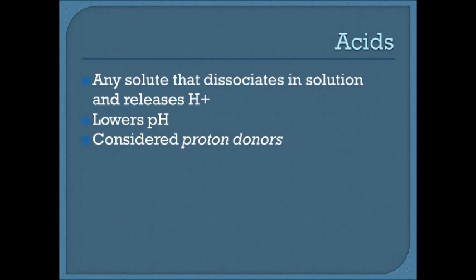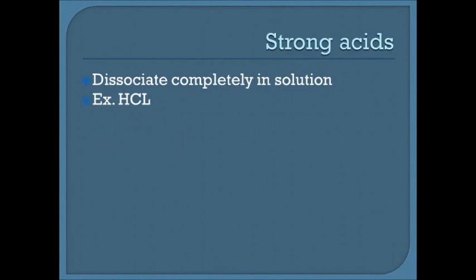Acids are any solute that dissociates in a solution and releases hydrogen ions, which lowers the pH. Acids are generally considered proton donors, as hydrogen ions are considered protons. Strong acids dissociate completely in solution. An example is HCl, or hydrochloric acid — the acid in our stomachs — which dissociates completely into hydrogen ions and chloride ions.